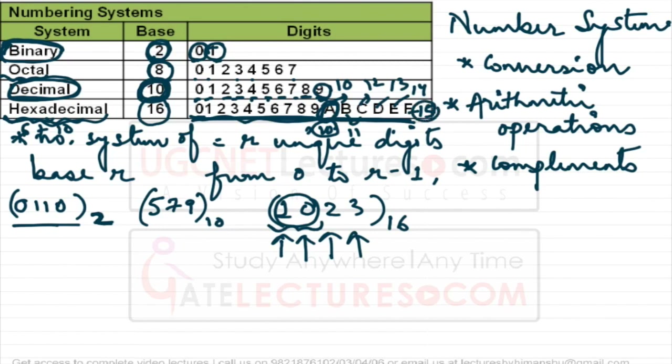One more thing to note: the largest possible digit in a number system of base R is R minus 1. So if asked for the largest possible three-digit number in base 16, the answer is FFF.